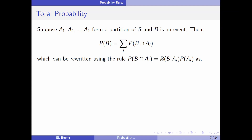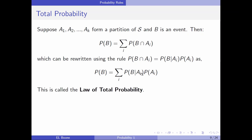This can be rewritten using the rule we worked with last time, and if we keep going with it, we can get this rule. It's essentially the same, but you'll see why we have it in this format later. This is called the law of total probability. If we have a partition and we can find the intersections with events, then we can find the total probability of that event.